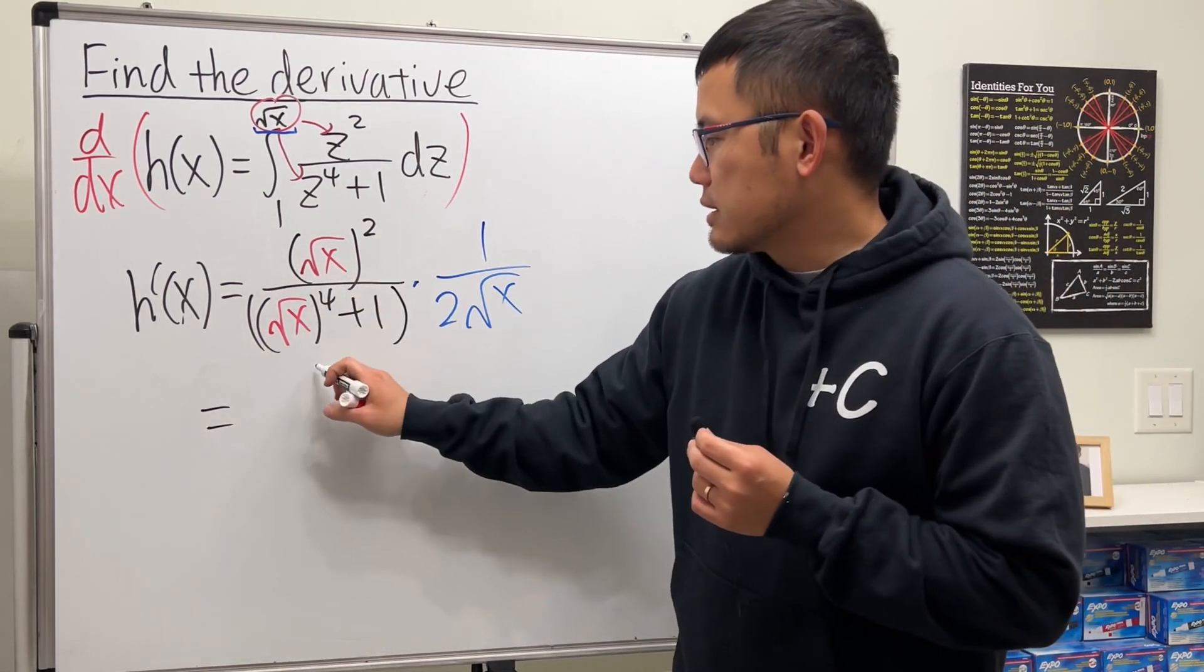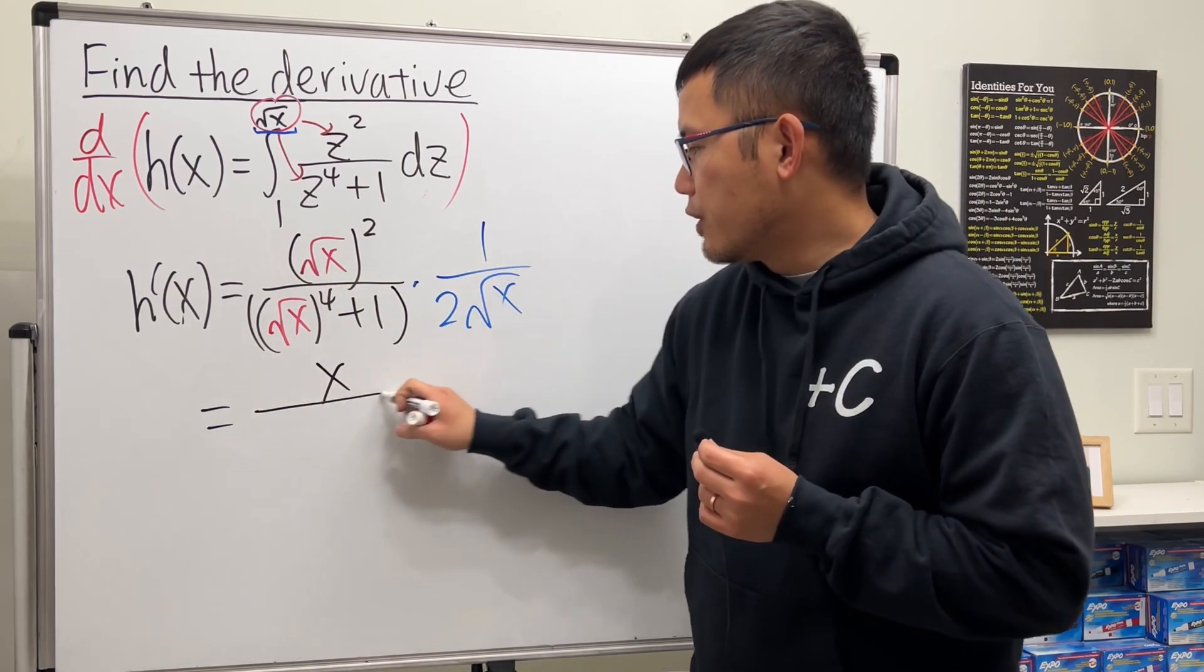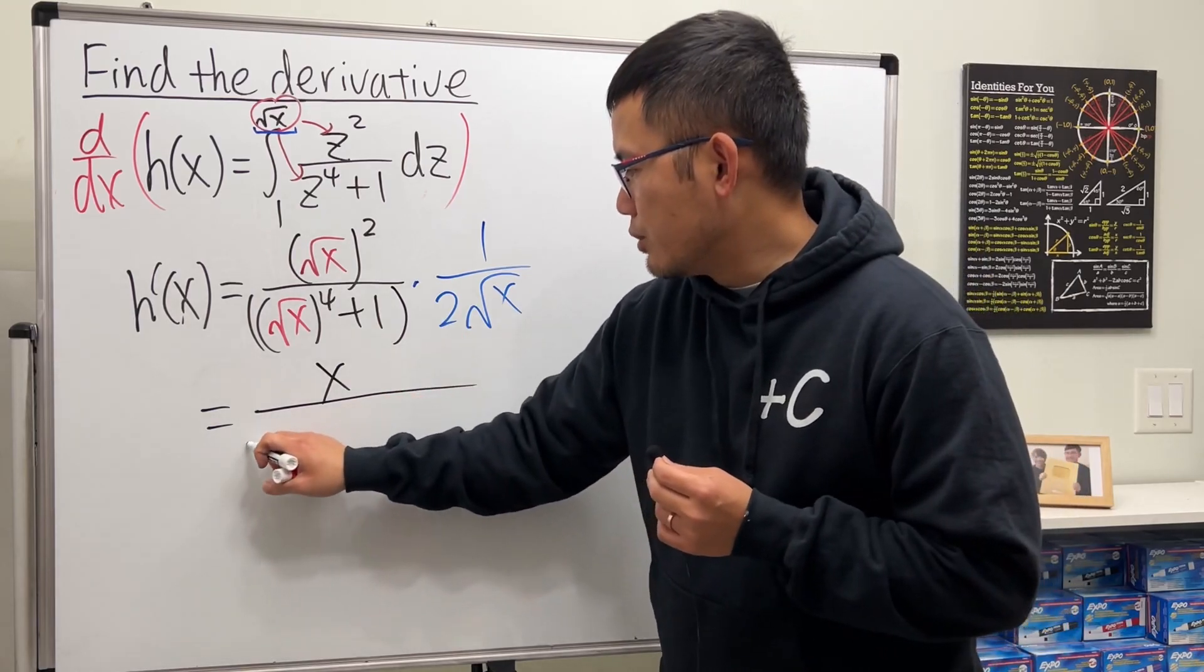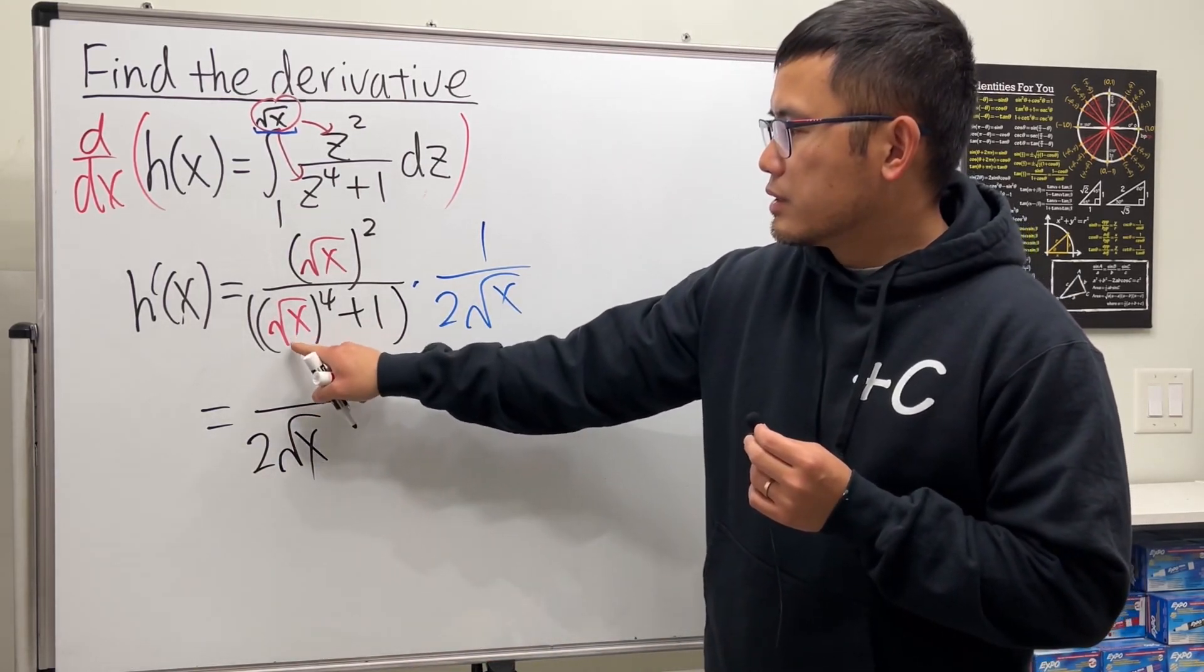Here is just x, and then times 1 is just x, over... Let's put this down right here first. So we have the 2 square root of x, right here. Square root, and to the fourth power.